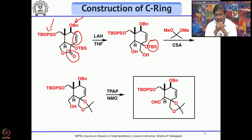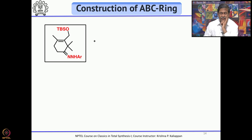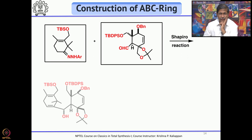The C-ring fragment is used in the Shapiro reaction. You take the tosylhydrazone and treat with 3.3 equivalents of butyllithium to generate the vinyllithium species, then quench with the aldehyde. This Shapiro reaction gives the allylic alcohol product.